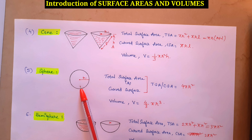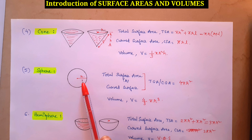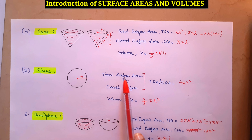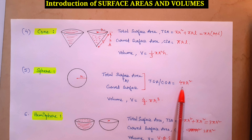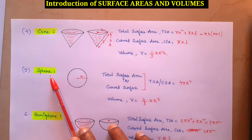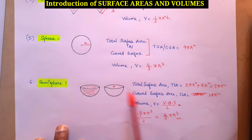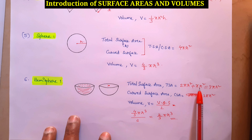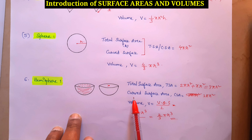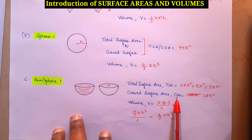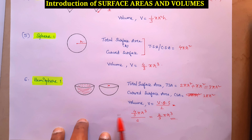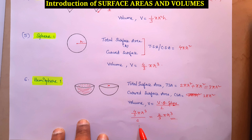For sphere: both total surface area and curved surface area = 4πR². Volume = (4/3)πR³. For hemisphere: TSA = 2πR² + πR² = 3πR². Curved surface area = 2πR². Volume = (2/3)πR³.